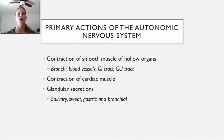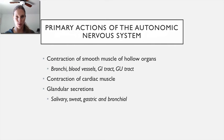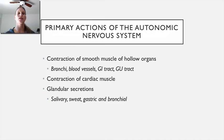The primary actions of the autonomic nervous system — what we refer to as the targets — include contraction or relaxation of smooth muscle of hollow organs. Anything that's hollow is a target: the airway, the bronchi, blood vessels, the entire gastrointestinal system and its organs, and the genitourinary organs. The smooth muscle wrapping all those hollow organs is a target of the autonomic nervous system. Cardiac muscle is a target as well.